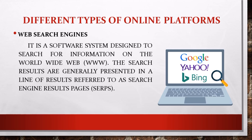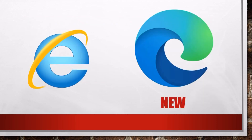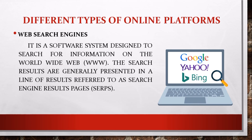Web search engines. It is a software system designed to search for information on the World Wide Web. The search results are generally presented in a line of results referred to as search engine results pages, or SERPs. So students, you have to remember that we have lots of browsers — Internet Explorer, Opera, Google Chrome, and so many more. Now you might ask: what's the difference between a web search engine and a web browser?